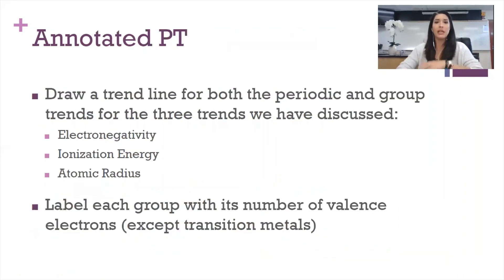So what I would like you to do now on your periodic table is draw a trend line for both the period and the group trends for the three trends we've discussed. Ionization energy, electronegativity, and like what we talked about the other day, atomic radius. And then label each group with the number of valence electrons it has. You can skip the transition metals in columns 3 through 12 and stick to groups 1, 2, and then 13 through 18.